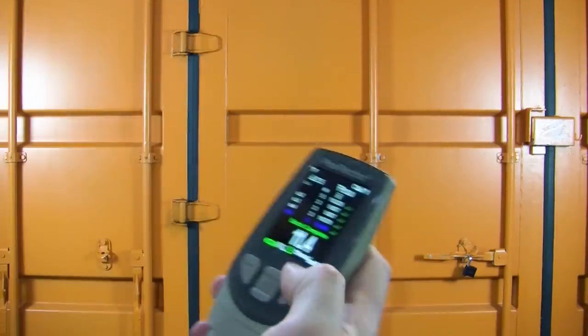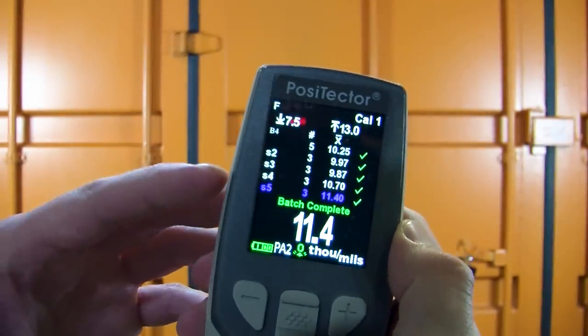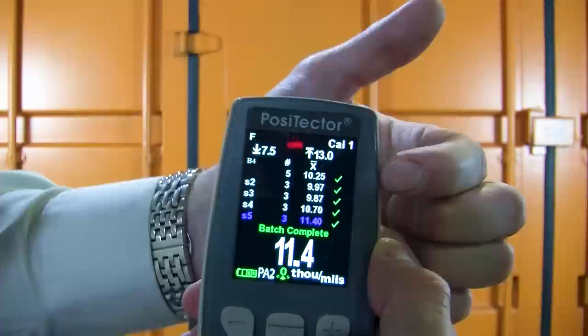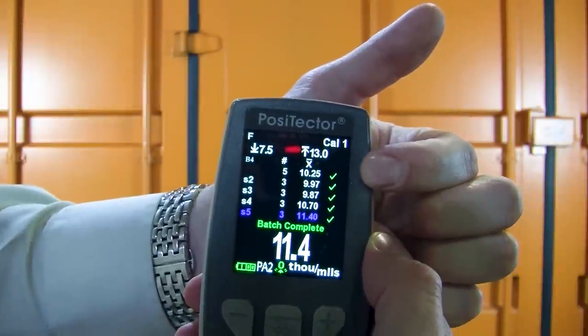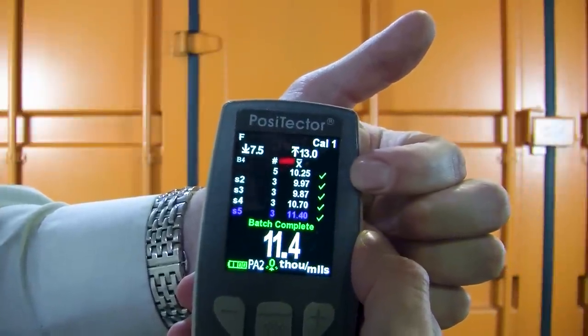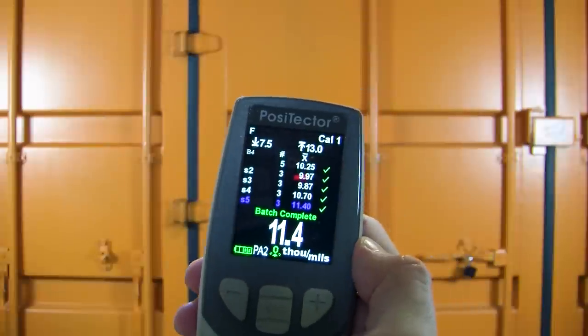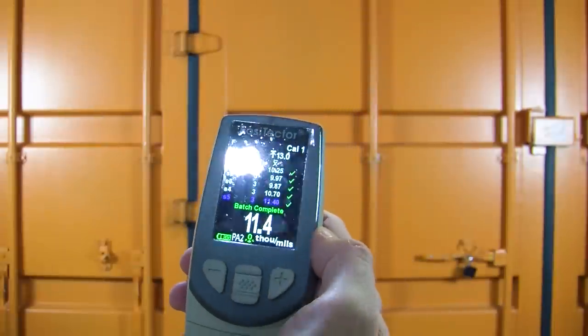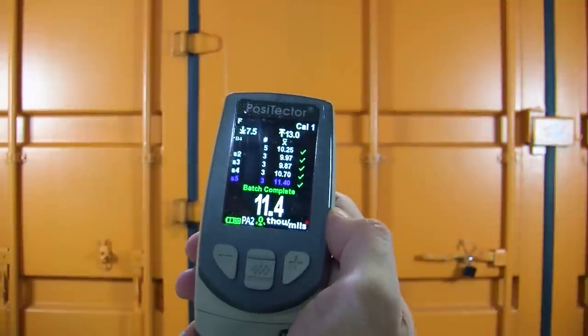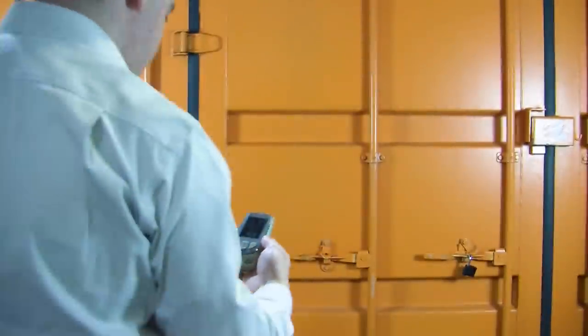Here you can see the results. So batch is complete. Our overall average is 10.25 mils. And you can see our different spot readings. You can see that the batch has been completely calculated according to the PA2 standard and takes all the mathematics out of it.